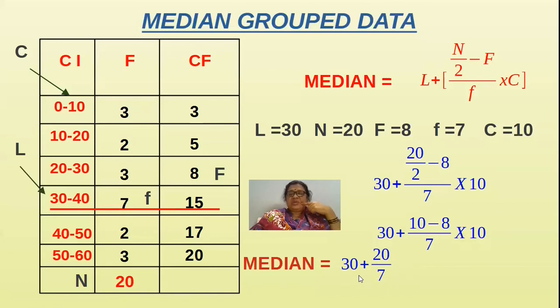Instead of that you can do first division here. You divide 20 with 7, that will be more easy. You will get 2.857 and it is very simple to add and put the answer. This is the median for grouped data.